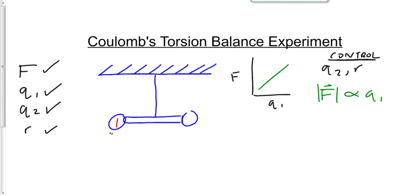In other words, as Q1 doubles, then F doubles. As Q1 gets cut by a factor of four, then F goes down by a factor of four. They're directly related.